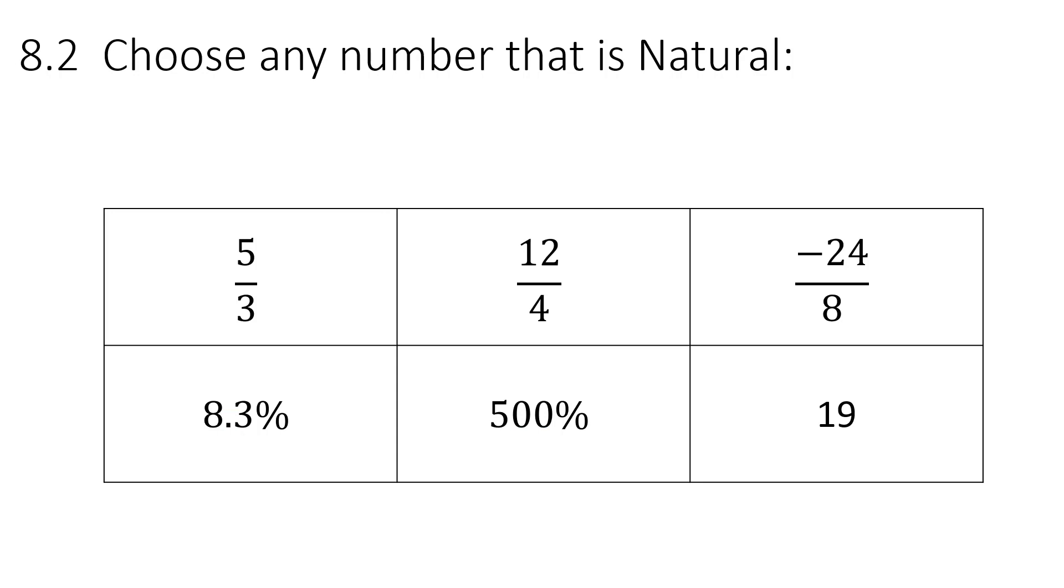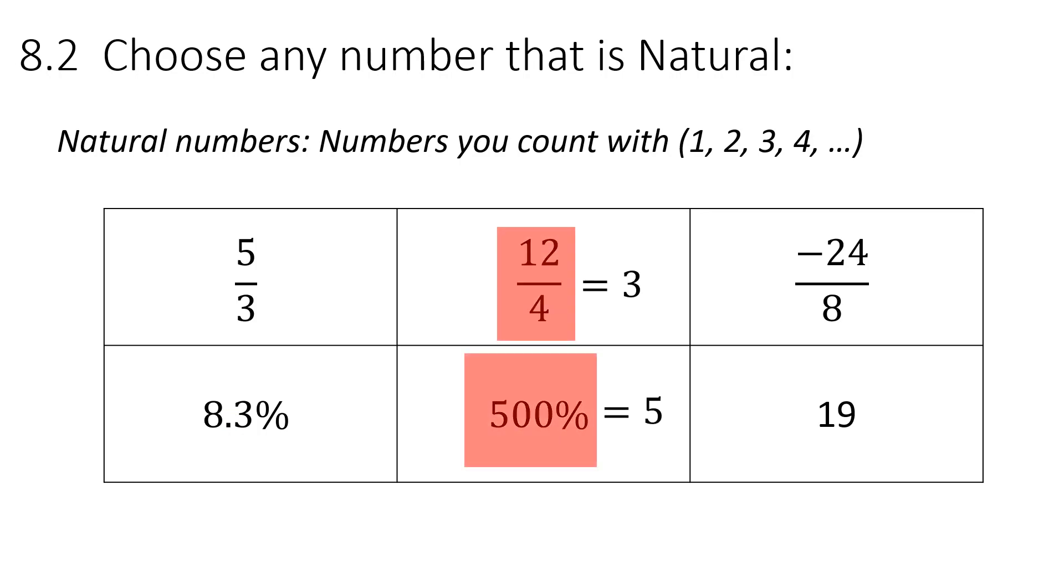So which numbers are natural? You need to remember that natural numbers are numbers that you count with, sometimes known as counting numbers. 1, 2, 3, 4, 5. No decimals, no negatives, not even zero. So we've got that being natural, that being natural because it's 5 and 19. And that's that.